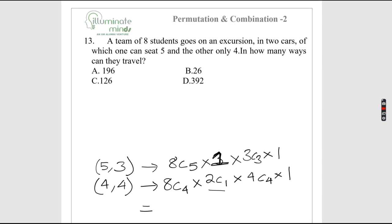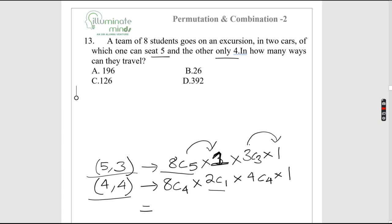A team of 8 students travels in two cars — one seats 5, the other seats 4 (but wait, 5+4=9≠8, so groupings are 5+3 or 4+4). For the 5-3 grouping: choose 5 from 8 in 8C5 ways, the remaining 3 go in 3C3 = 1 way, giving 56 arrangements.